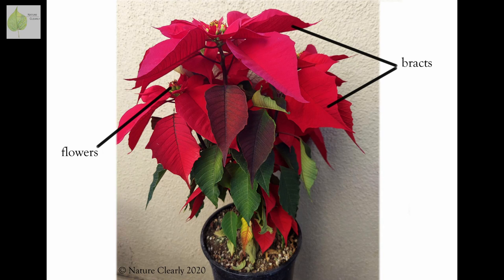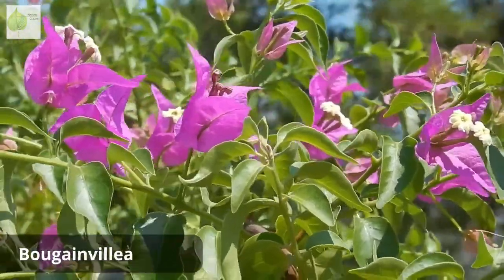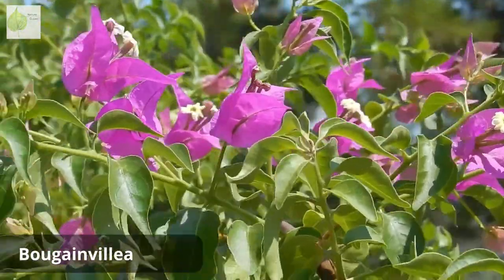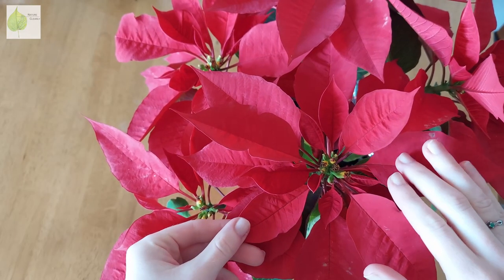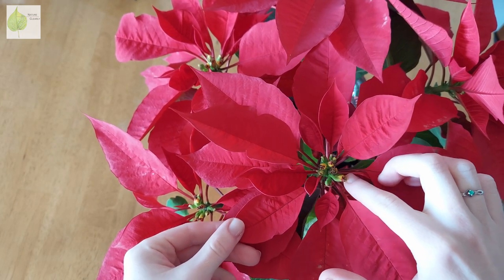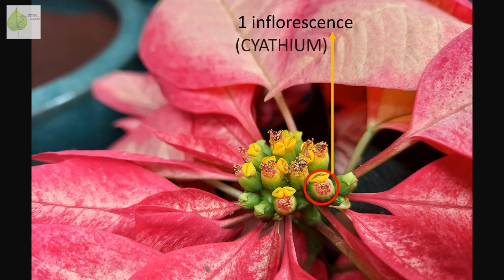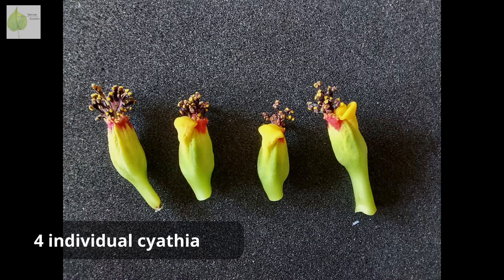First, let's locate the flowers. Poinsettias are valued for their showy red bracts, or modified leaves, that often get confused with flowers. There are many plants whose bracts act as false flowers, but that's a topic for another video. To find the true flowers, we have to look in the middle of those bracts. See these structures? Each one of these structures is an inflorescence, a cluster of individual flowers. In the case of the poinsettia, we call this type of inflorescence a cyathium. So what you are seeing with our poinsettia is multiple cyatheia.